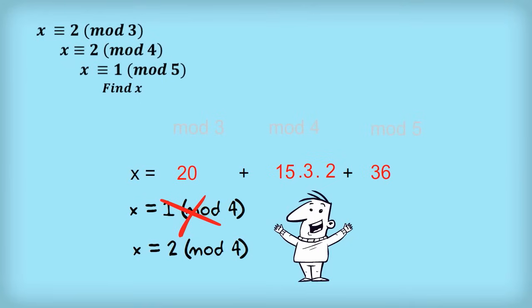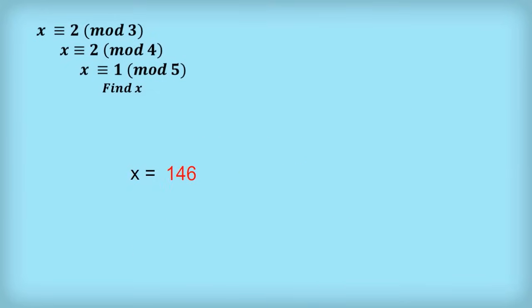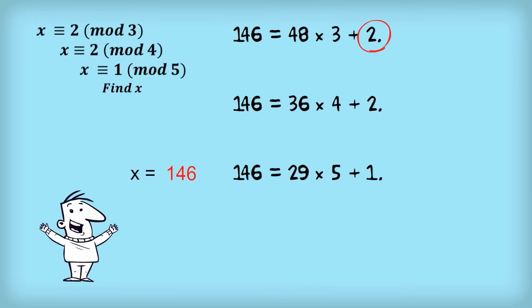If we add all this up, we find that x equals 146. Sure enough, 146 is equivalent to 2 mod 3, 2 mod 4, and 1 mod 5, as we want. I'll leave you to check that this is correct.